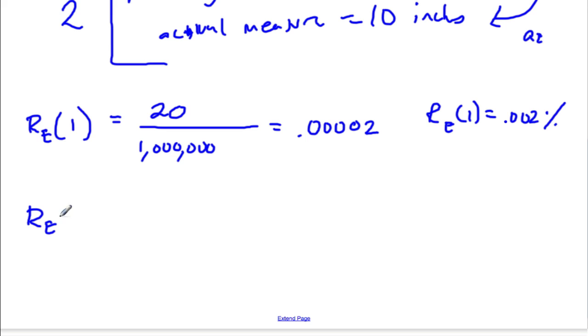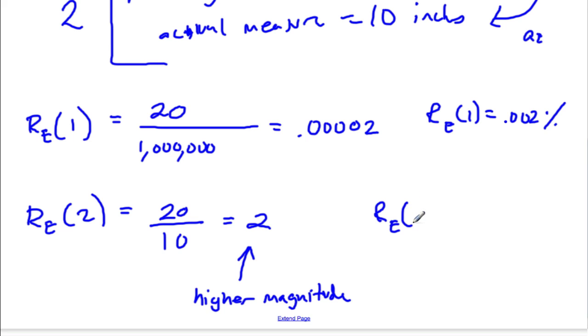However, in situation 2, the relative error, well, for absolute error, we were off by 20 inches, but our foot was only 10 inches long. So in fact, this was a relative error of 2. 2 is a much higher error than this. So in fact, it has a much higher, we say, magnitude. It's a much greater impact. And the relative error, and the percent of the situation, is 2 times 100, or 200 percent error. So as we said before, this error is much more significant. It has a higher magnitude.